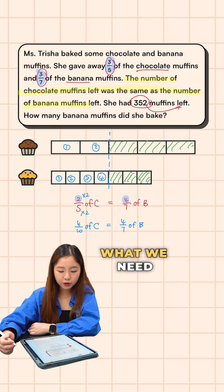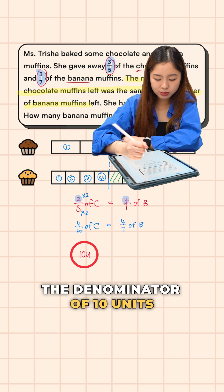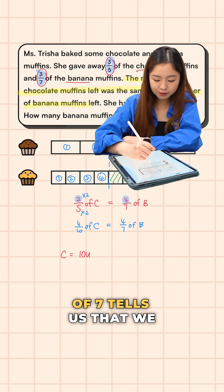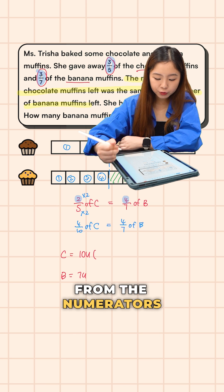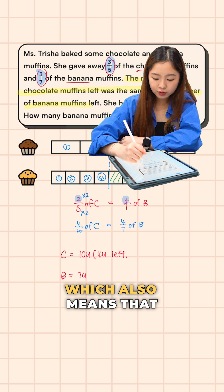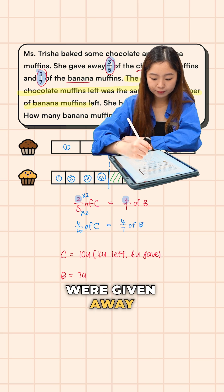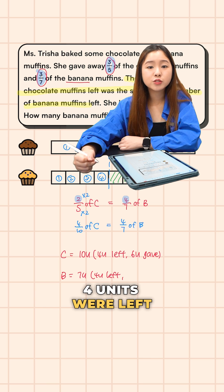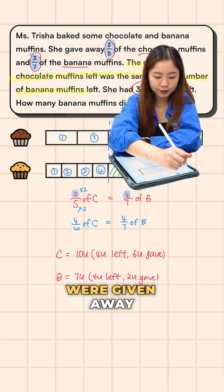Once we have this, we need to assign units. The denominator of ten tells us there were ten units of chocolates, and the denominator of seven tells us there were seven units of bananas. From the numerators, four units of chocolates were left, which means six units of chocolates were given away. For the banana muffins, four units were left, which means three units were given away.